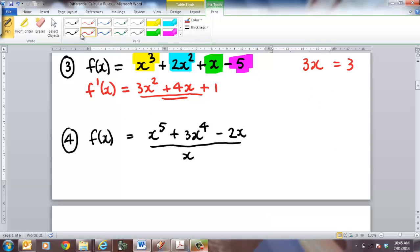Now this is another sort of question that you might get. If I get something like this we don't know how to deal with two different functions. So what we have to do is divide this term down the bottom to all of these other terms. So I can now rewrite that as x to the 4 plus 3x to the 3 minus 2x. That's going to become equal to 4x to the 3 plus now 3 times 3 is going to give me 9x squared and then the 2 is going to disappear.